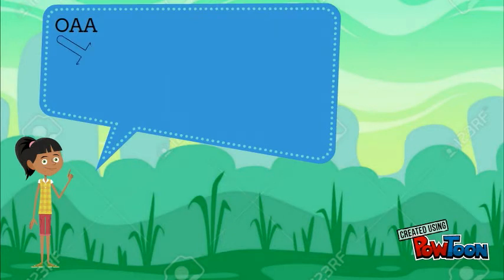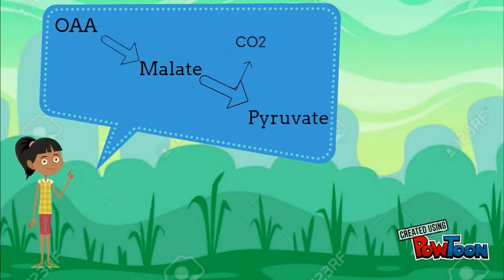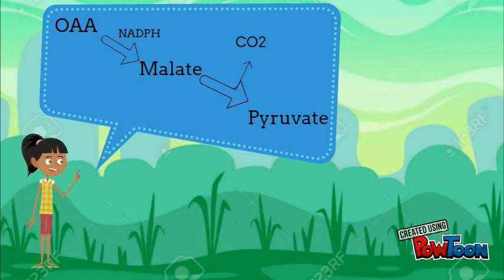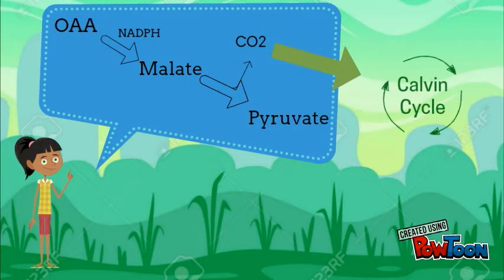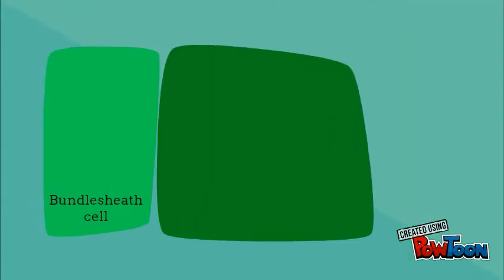Oxaloacetic acid is reduced to malic acid using NADPH. This reaction is catalyzed by malic dehydrogenase. Then malic acid is transported to the bundle sheath cell, where it is decarboxylated in the presence of NADPH and a specific malic enzyme to produce pyruvic acid and CO2.